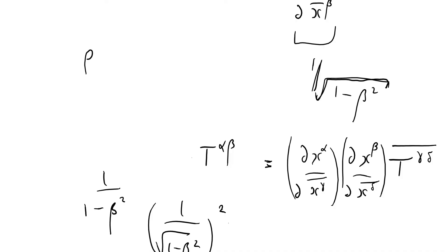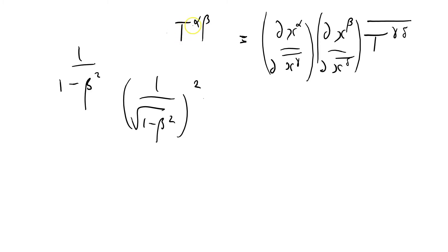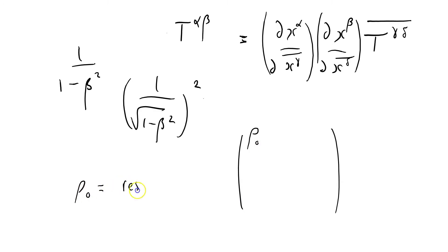In our general relativity step-by-step series, we've been talking about T^αβ, the stress-energy momentum tensor. If I write it in matrix form, we've got row zero where row zero equals the rest density, and we've got all these other terms that we don't really know very much about at this point.